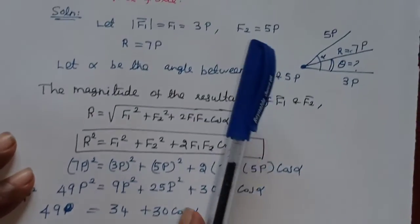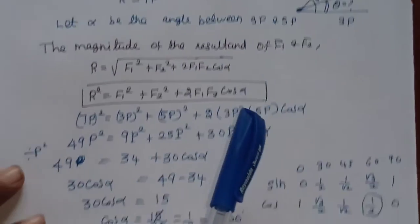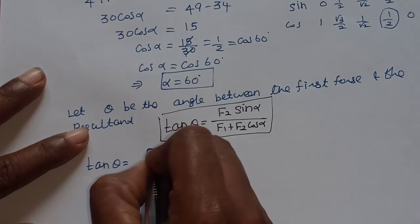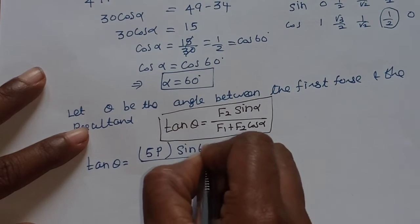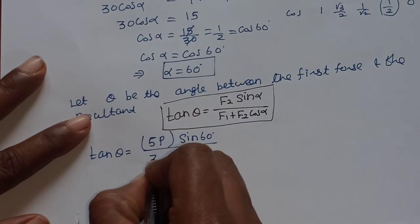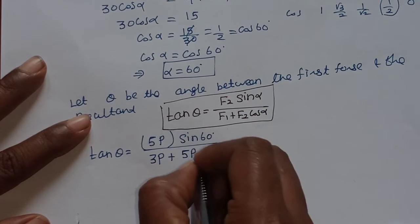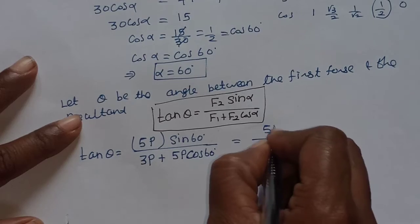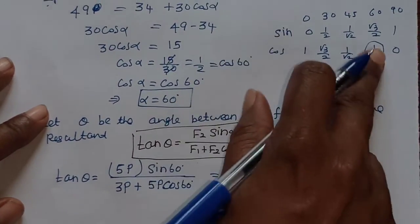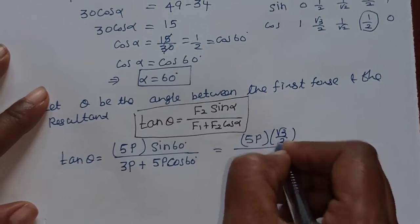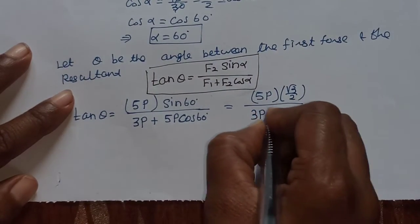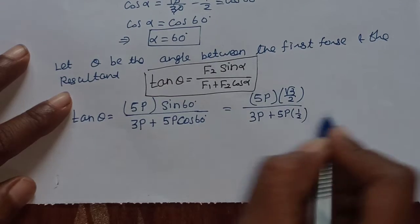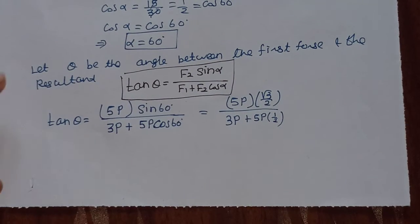The formula is: tan(theta) equals F2 sin(alpha) divided by F1 plus F2 cos(alpha). Substituting: sin(60°) is root 3 by 2, so the numerator is 5p into root 3 by 2. The denominator is 3p plus 5p times cos(60°), where cos(60°) equals 1/2.